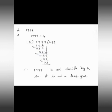4 times 9 is 36. Next, do subtraction. 9 minus 6 is 3, and 3 minus 3 is 0. Here the remainder is 3, so the remainder is not 0. Therefore, 1999 is not divisible by 4, so it is not a leap year.